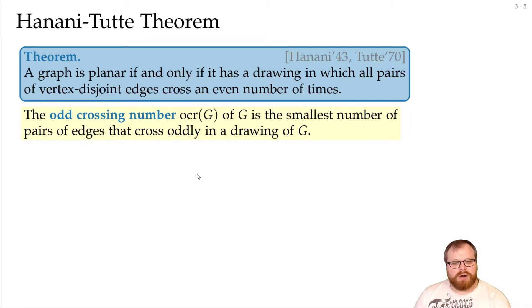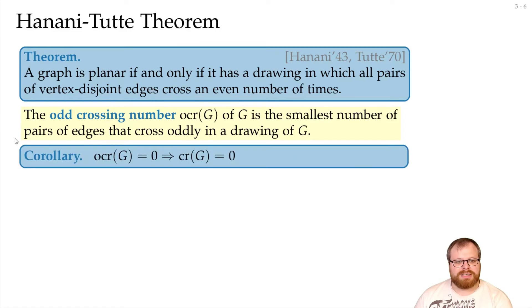For that, there is the definition of the odd crossing number. The odd crossing number is exactly the smallest number of pairs of edges that cross oddly in a drawing of G. And it follows from Hanani-Tutte that if the odd crossing number is zero, then the crossing number is also zero, because then we only have even number of crossings between each pair.